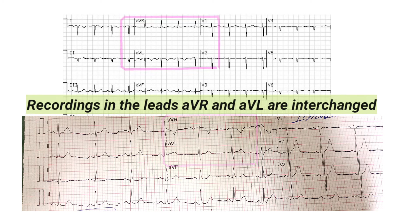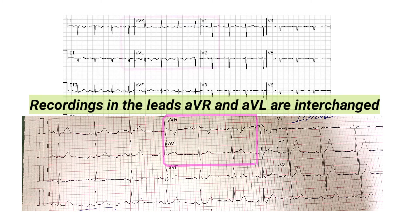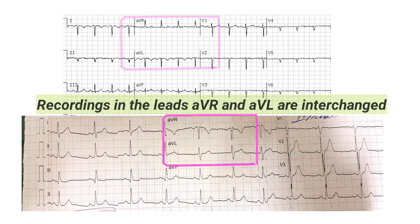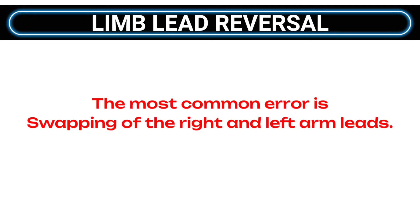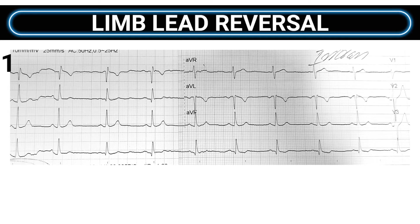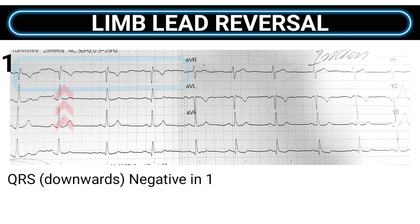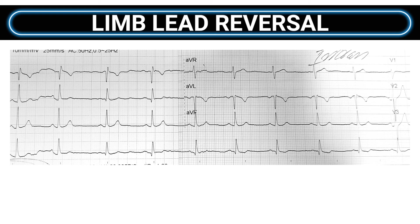This is the opposite of what you would see in a normal heart orientation — in other words, the recordings of lead AVR and AVL are interchanged. In contrast, limb lead reversal, such as when the arm leads are switched, creates a different pattern. The most common type of reversal is when the right and left arm leads are swapped.